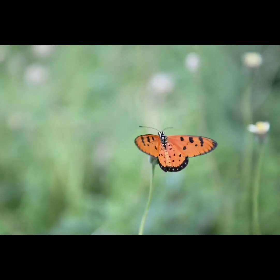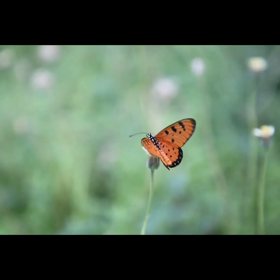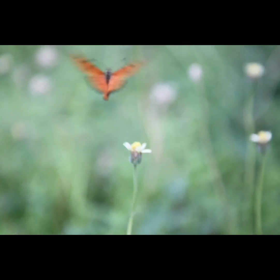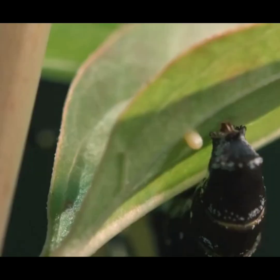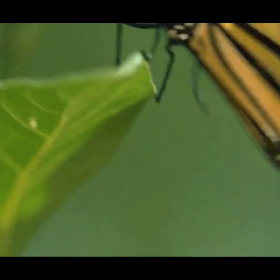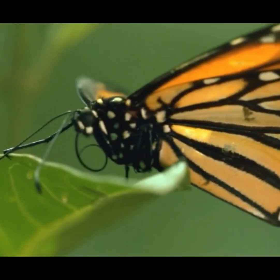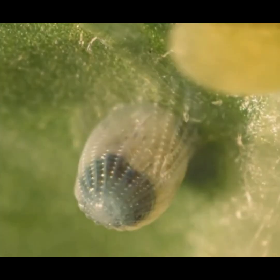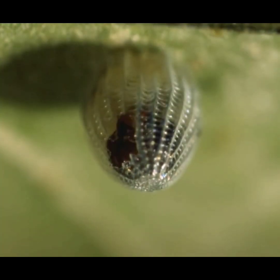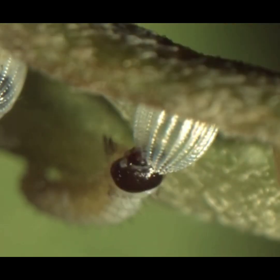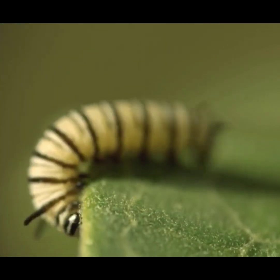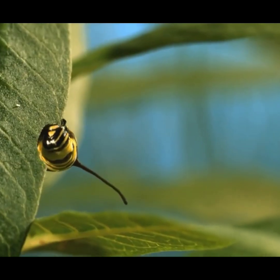Next, the life cycle of a butterfly. Butterflies and moths undergo a complete metamorphosis, which means there are four separate stages in the life cycle: egg, larva, pupa, and adult. Each stage looks completely different